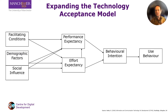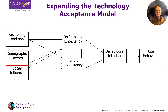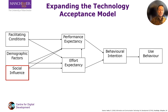Expectations about costs and benefits are in turn shaped by three wider factors. Facilitating conditions are perceptions about the broader institutional and technical infrastructure — is support for use easily available? Is broadband easily available? And so on. Demographic factors are individual characteristics that can impact perceptions around technology, such as age, income, and experience with the particular ICT4D application. Social influence can be defined as the degree to which an individual perceives that important others believe he or she should use the new ICT4D.